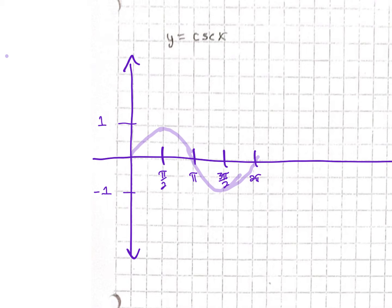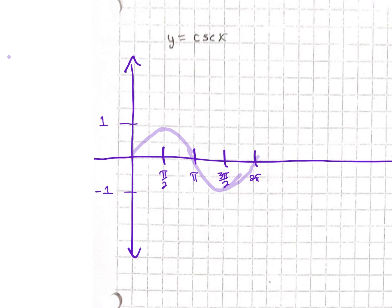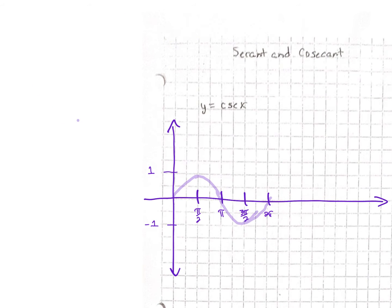I want you to think about the y values here, because if we take the reciprocal of them, that's how we're going to create our cosecant graph. The period is going to be 2 pi, just like it was for sine and cosine, so you may want to make a note about that.